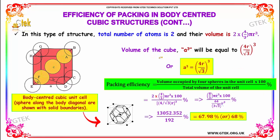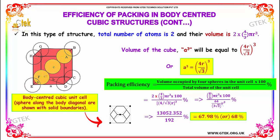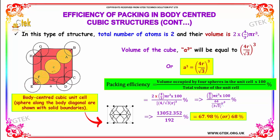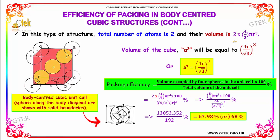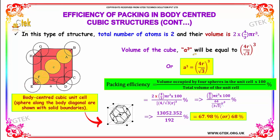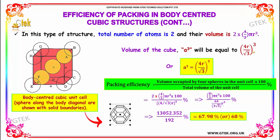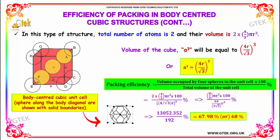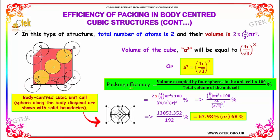Moving further, the total number of atoms in this structure is 2, so their volume is 2 × (4/3)πR³. The volume of the cube A³ = (4R / √3)³.